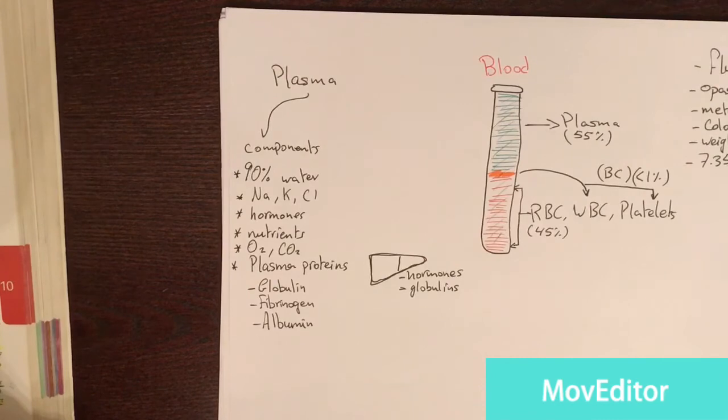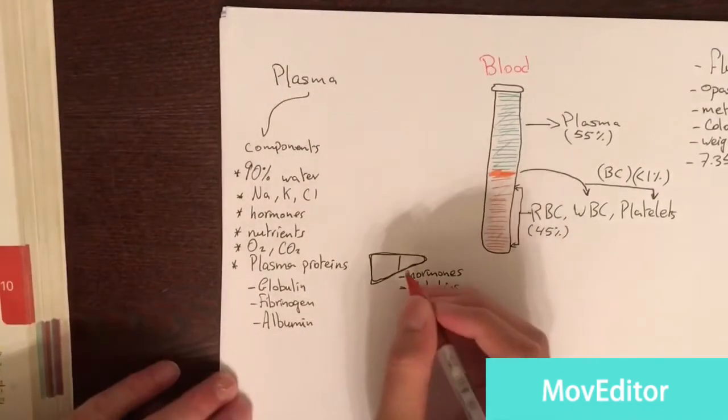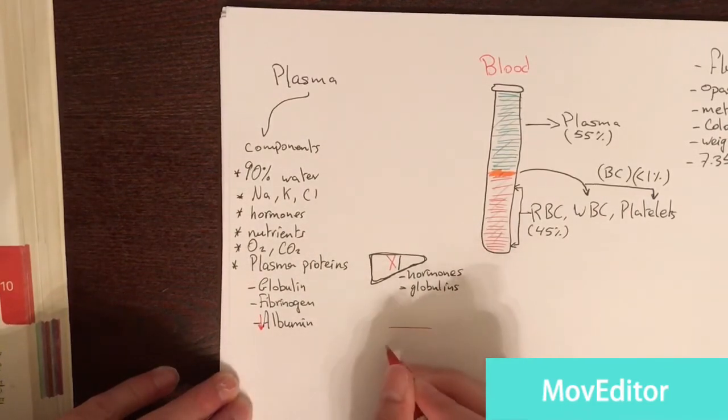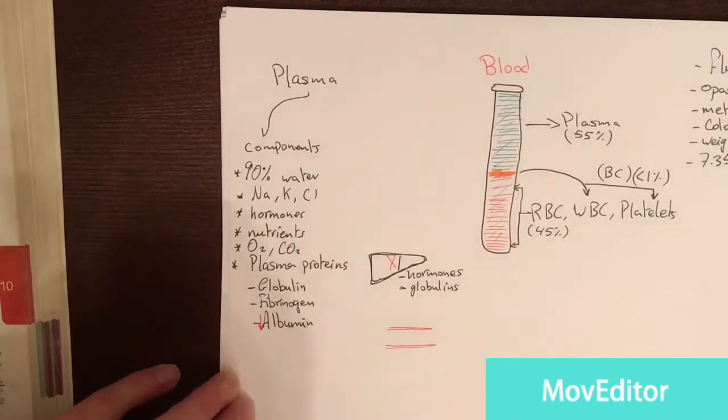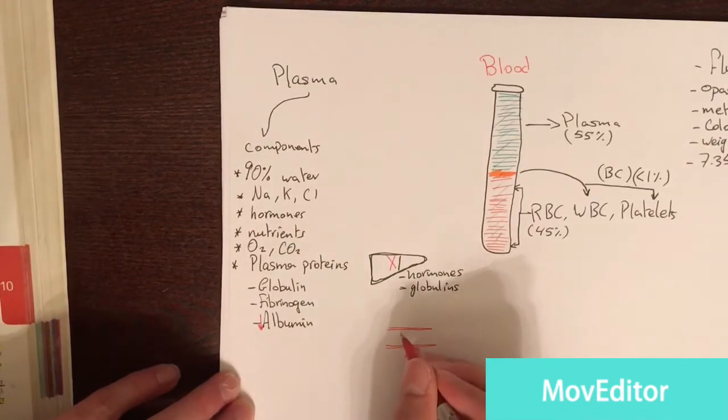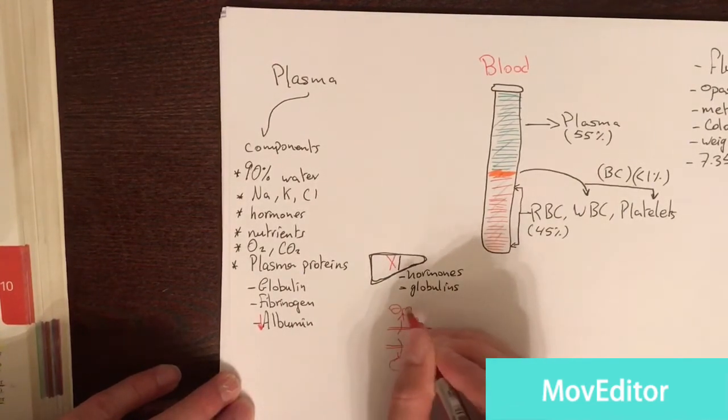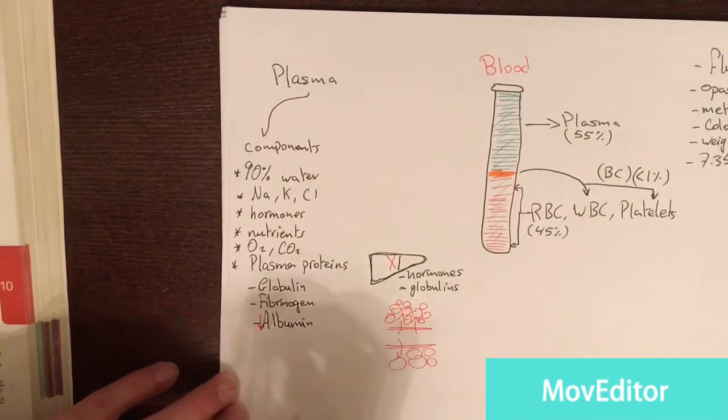Another thing is albumin helps to maintain the osmotic pressure of the blood. So if we have a liver failure, we will have less albumin. And let's say that this is a blood vessel, and this blood vessel is filled with blood. The water, or the solvent, will start leaking out of the blood vessel into the tissues. This will cause a condition known as edema. Because we will have less albumin or less solute inside the blood.